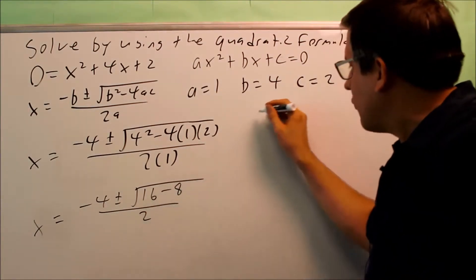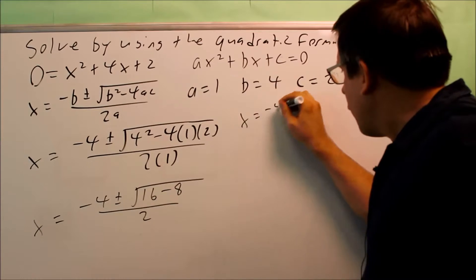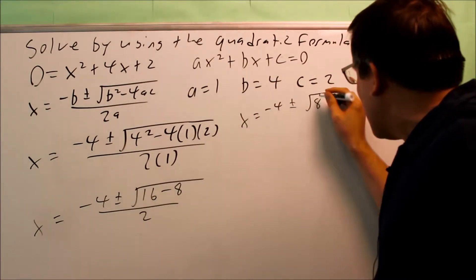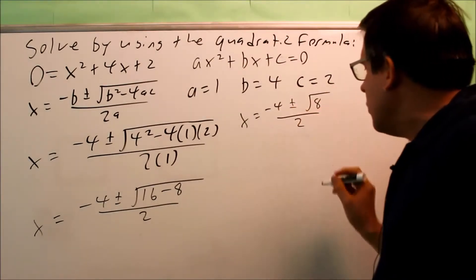We're going to keep on going. We want to simplify this further. Negative 4 plus or minus the square root of 8 over 2.